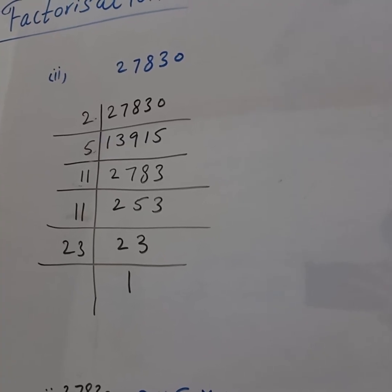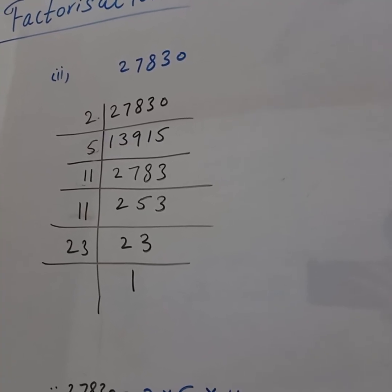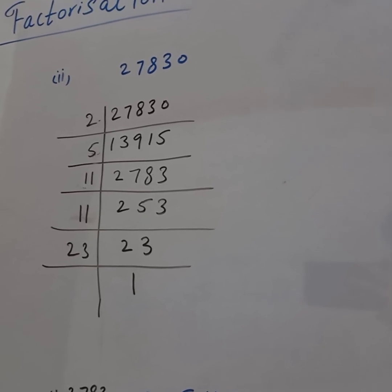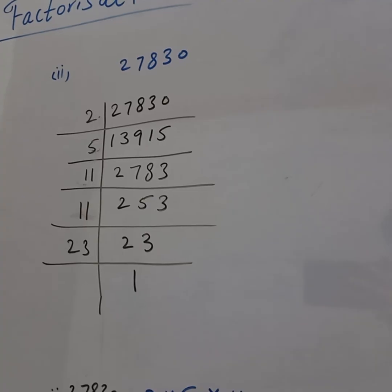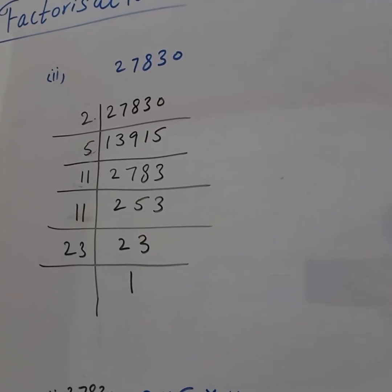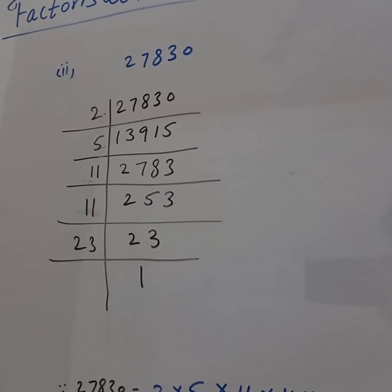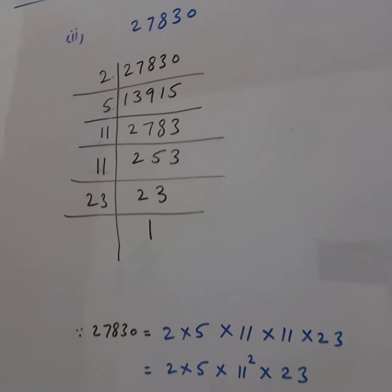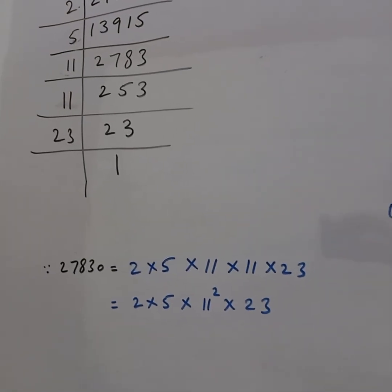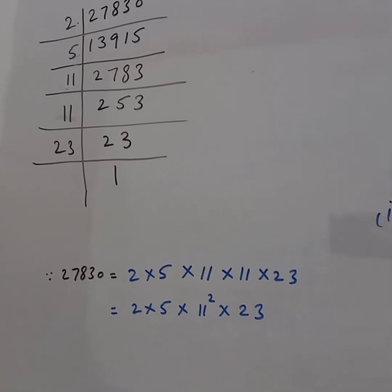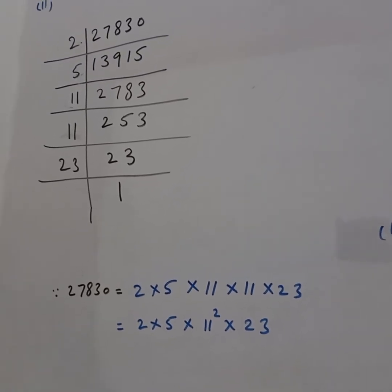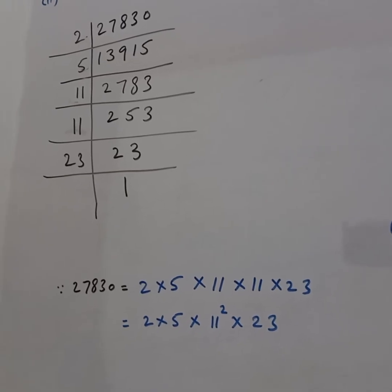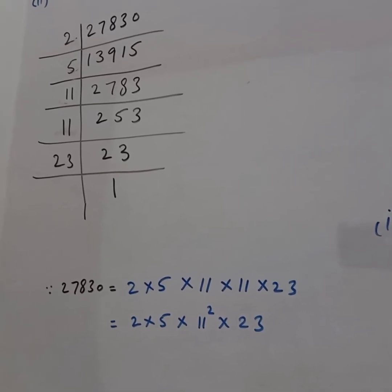Eleven fives are 55, three left. Eleven threes are 33, eleven twos are 22, three left. Eleven threes are 33. Next, twenty-three ones are 23. So 27830 = 2 × 5 × 11 × 11 × 23, which equals 2 × 5 × 11² × 23.